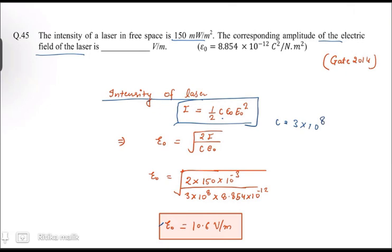c equals 3 × 10⁸ meters per second, ε₀ is the permittivity of free space, 8.85 × 10⁻¹² C²/(N·m²). We have to calculate E₀. I is given to us, which is 150 milliwatt per meter square.